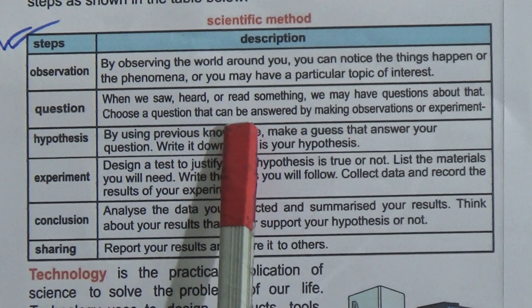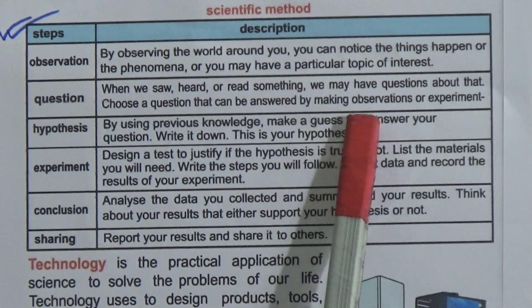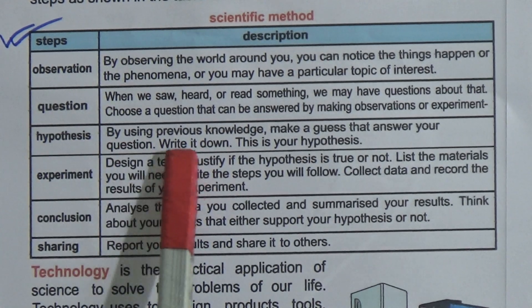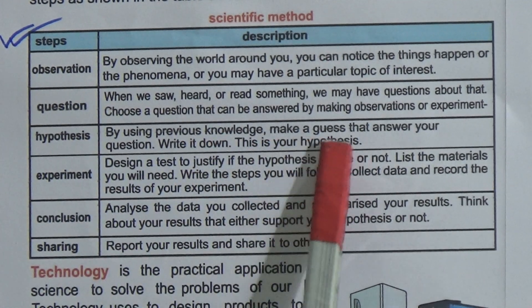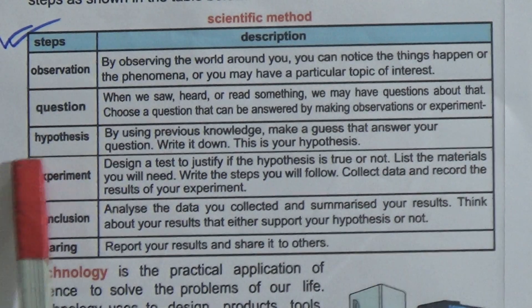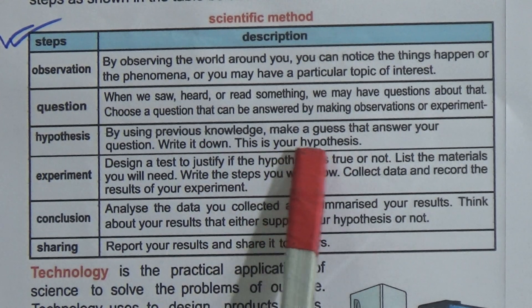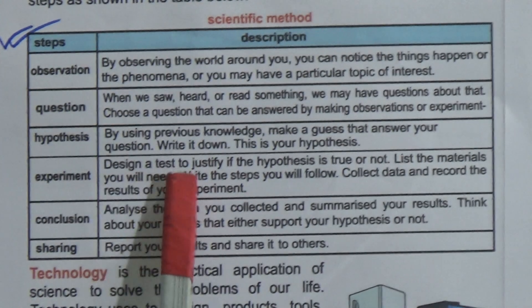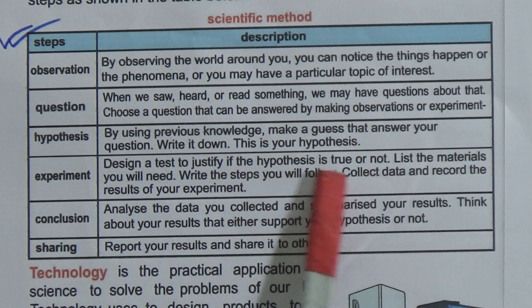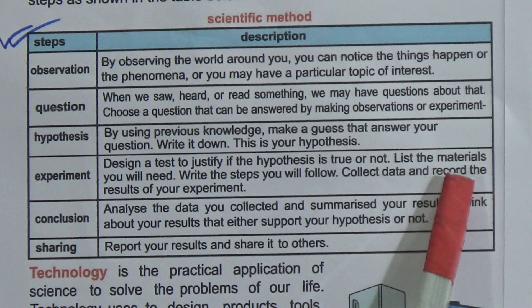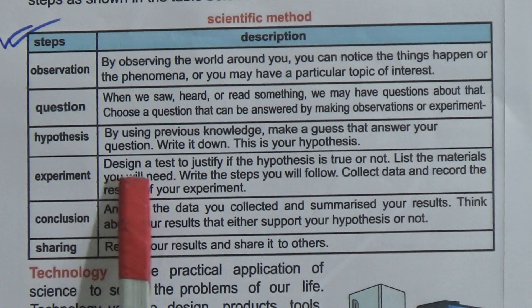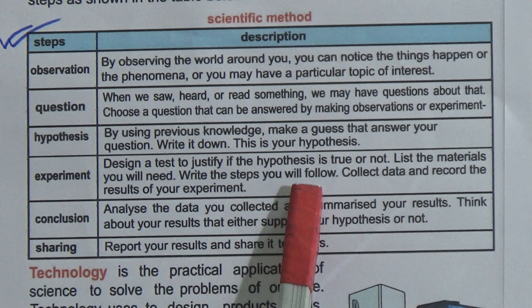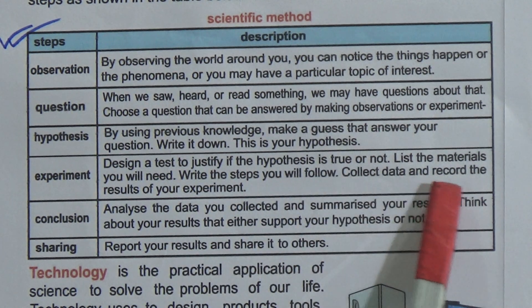Choose a question that can be answered by making observations or an experiment. Next is hypothesis — by using previous knowledge, make a guess that answers your question and write it down; this is your hypothesis. Next is experiment — design a test to justify whether the hypothesis is true or not, list the materials you will need, and write the steps you will follow.